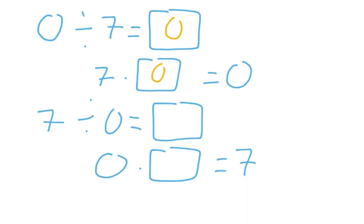No, 0 times anything is always 0. No matter what I put in that box, I'm always going to get 0. This cannot be done.